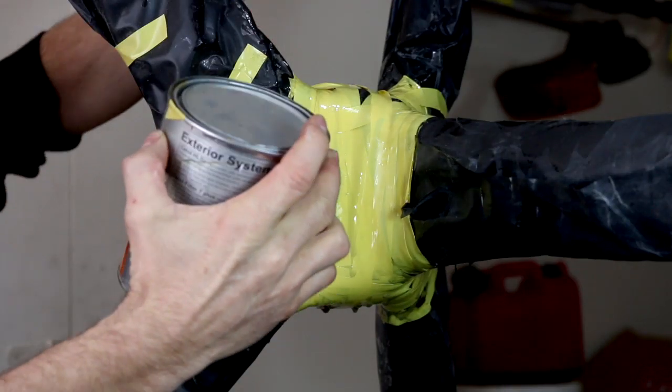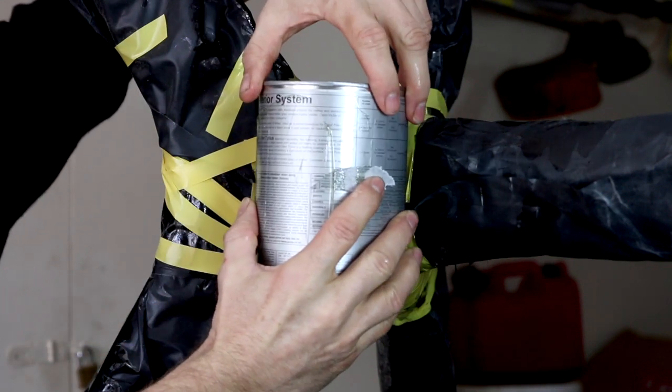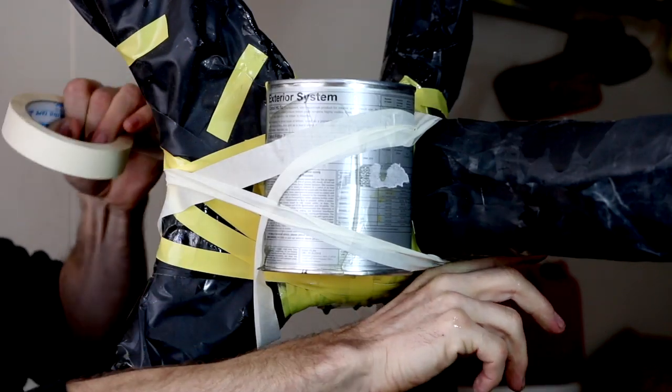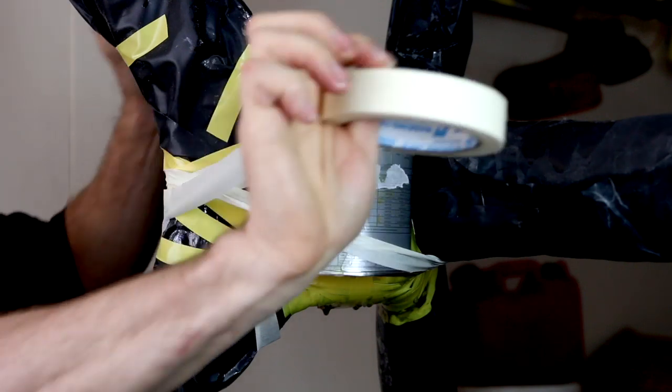To achieve inward pressure on the carbon fiber I used tins of paint as they had the correct circular shape that I was after.